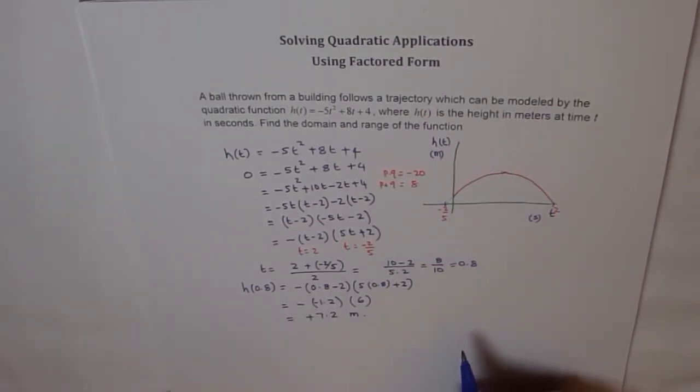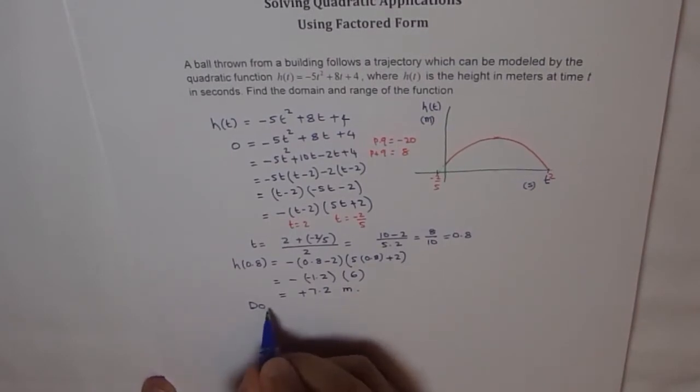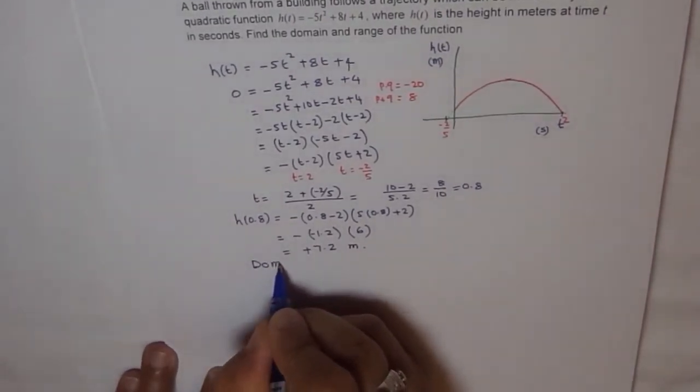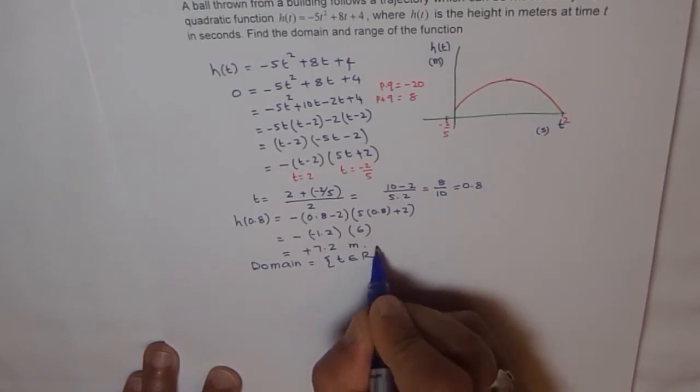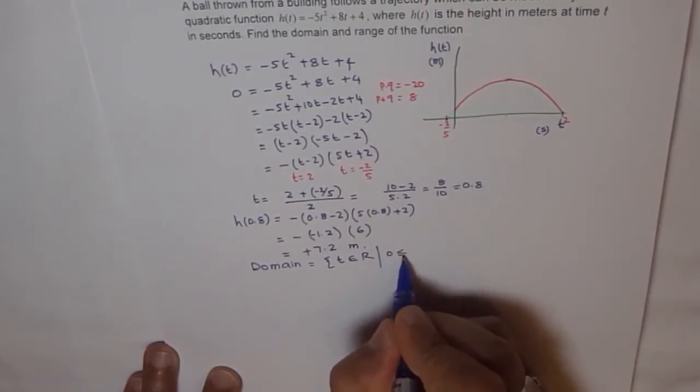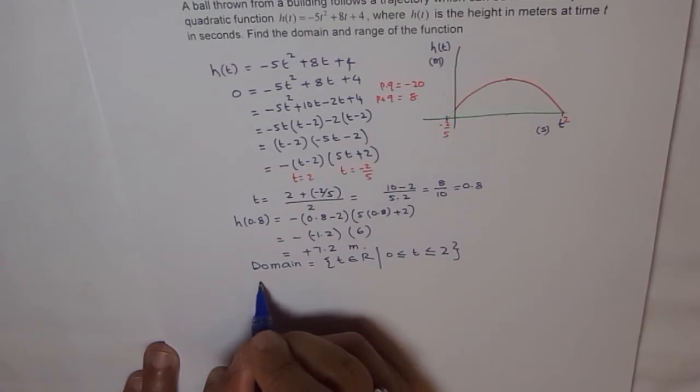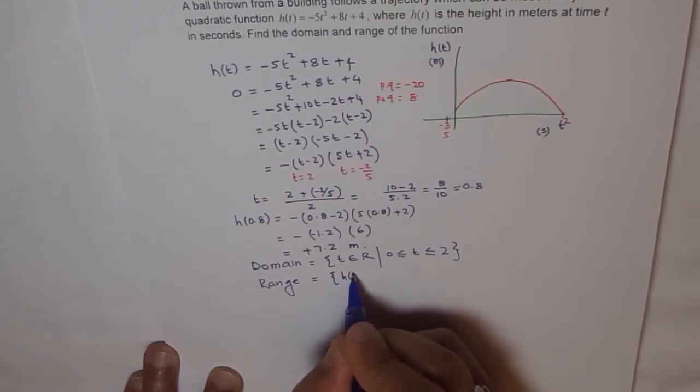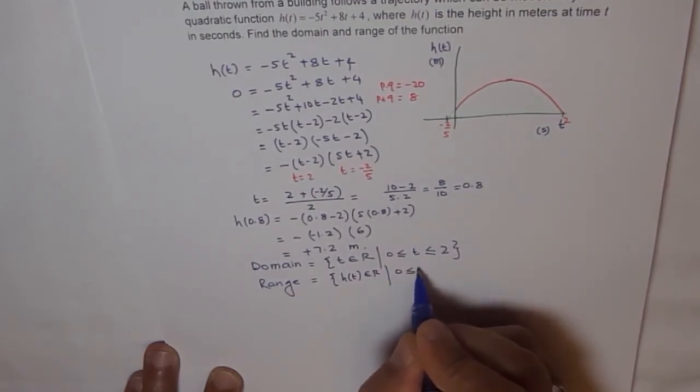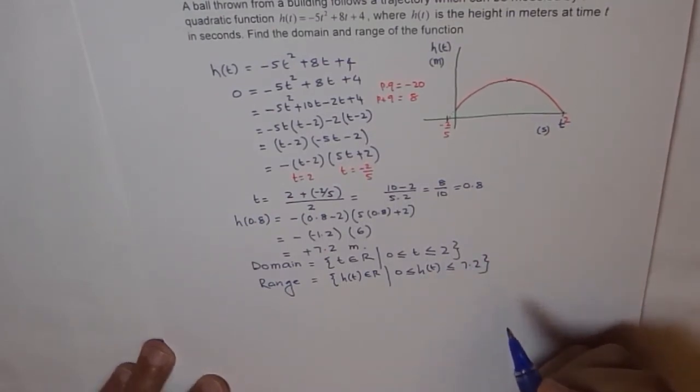Now we can write both domain and range. Domain is t belongs to real numbers where t is greater than or equal to 0 and is less than or equal to 2. And range is h(t) belongs to real numbers where it is between 0 and h(t) is less than or equal to 7.2. That's our domain and range for this problem.